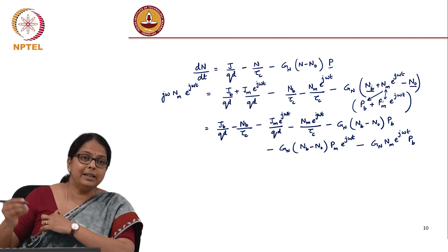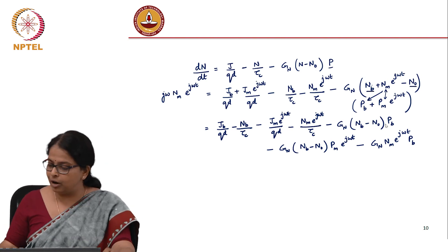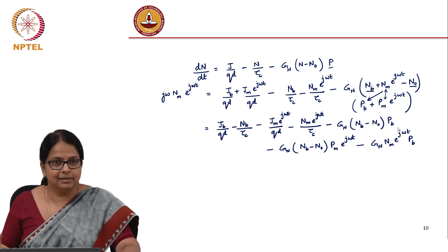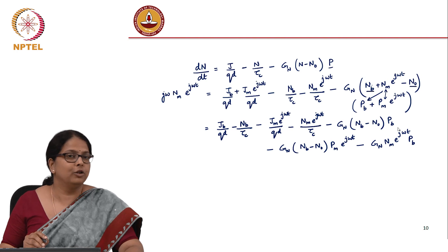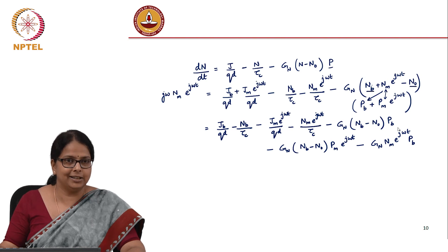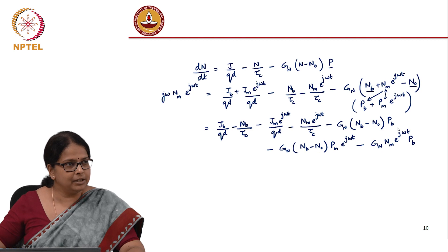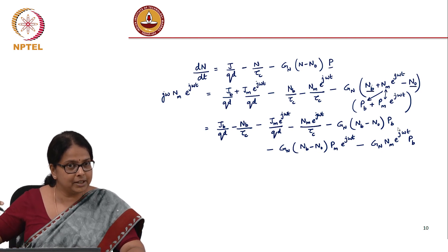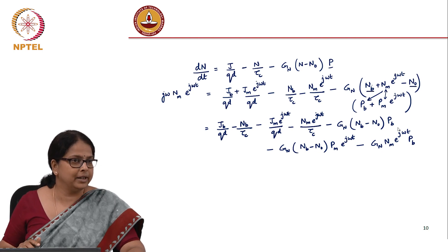Because under the limits that p_m and n_m are very small compared to other terms, we can ignore it for now. But in that sense, if you were to really characterize your laser diode, you will have to look at what are the second harmonics, what are the powers at which the second harmonic starts dominating.